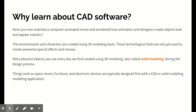So first of all, why learn about CAD software? Well, it is how a lot of designs are first created. Environments and characters in movies, as well as everyday objects, are first created using 3D modeling, also called solid modeling. Things such as space rovers, furniture, and electronic devices are typically designed first with a CAD or solid modeling application.